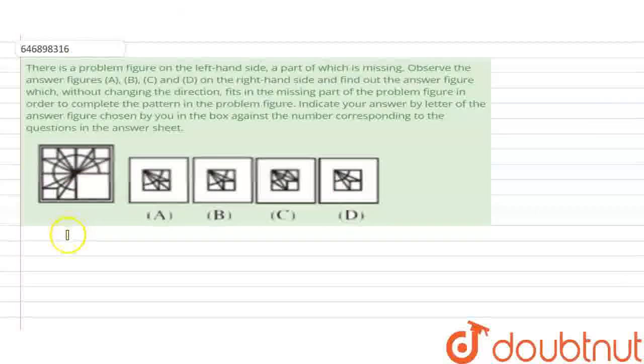Hello everyone, our question is: there is a problem figure on the left hand side, a part of which is missing. Observe the answer figures A, B, C and D on the right hand side and find out the answer figure which, without changing the direction, fits in the missing part of the problem figure in order to complete the pattern. Indicate your answer by letter of the answer figure chosen by you in the box against the number corresponding to the question in the answer sheet.